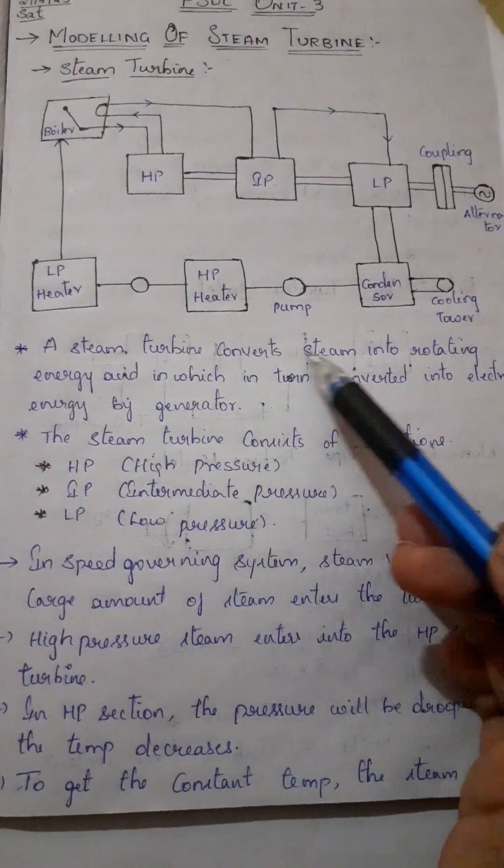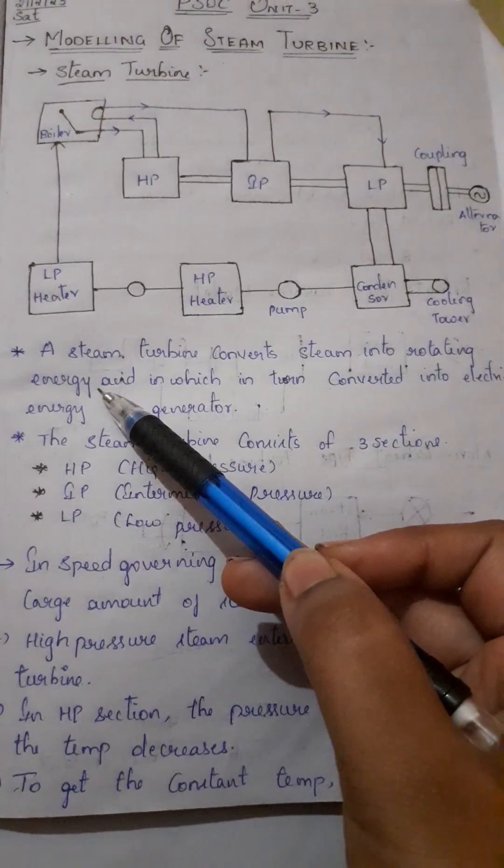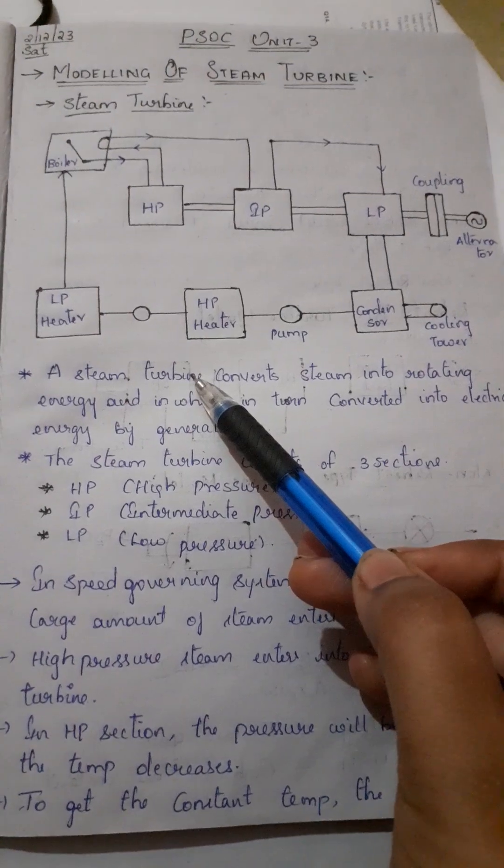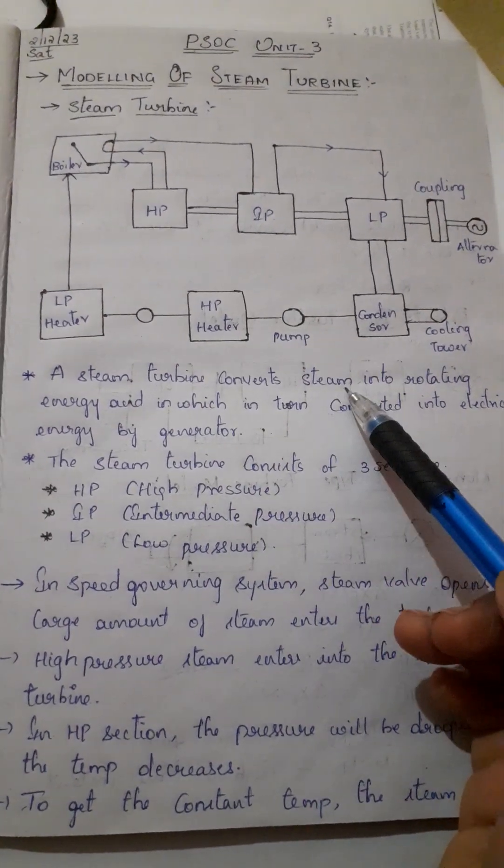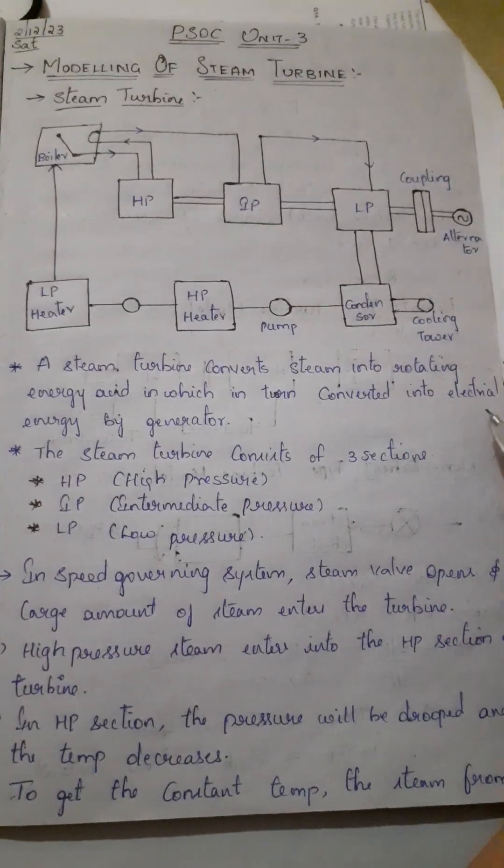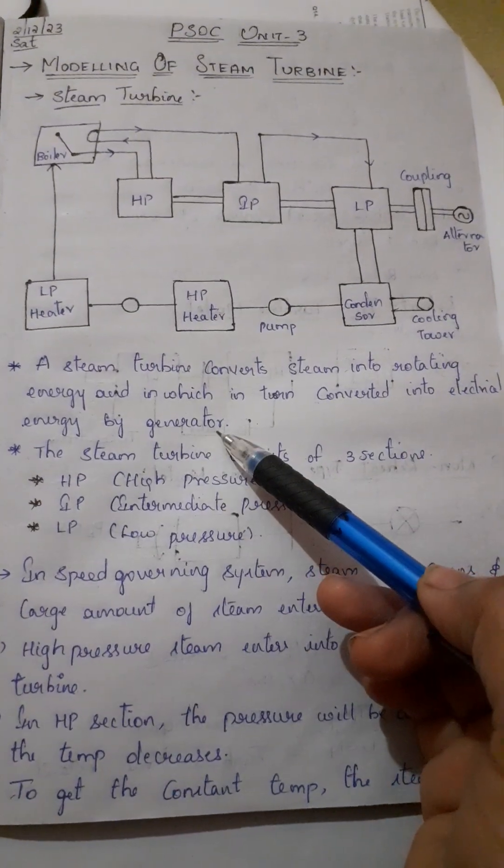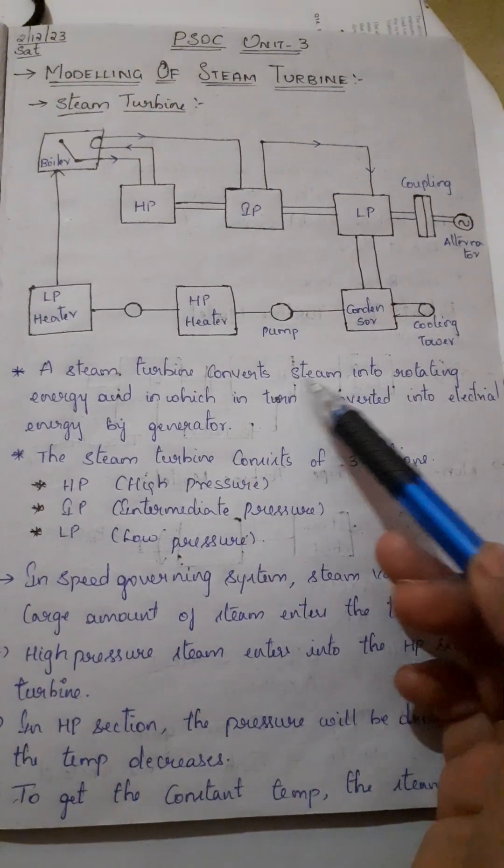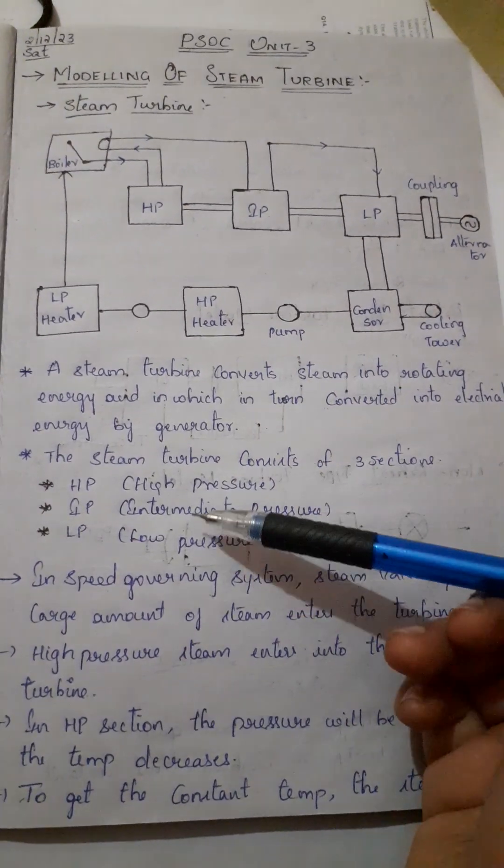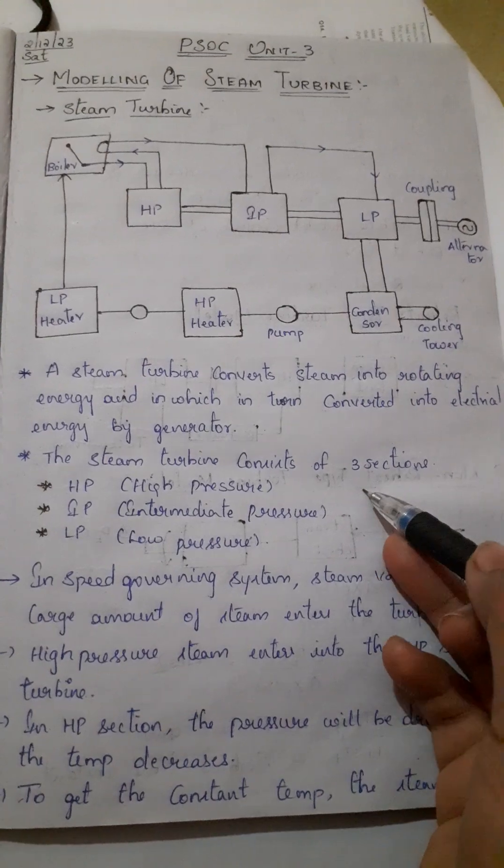A steam turbine converts steam into rotating energy. Here we have a steam turbine. What is the purpose of steam turbine? We have steam in rotating energy which is converted into electrical energy by generator. In this steam turbine, we have mainly three sections.